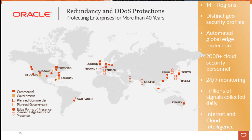Pretty much all the major cities in the U.S. either have a data center or availability domain, or will soon have it. There are distinct geo security profiles, automated global edge protection, 24/7 monitoring, and a lot of other features and functionality.